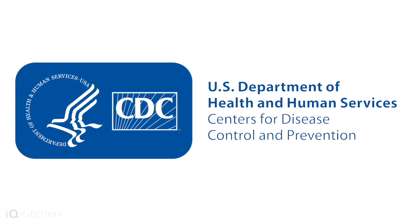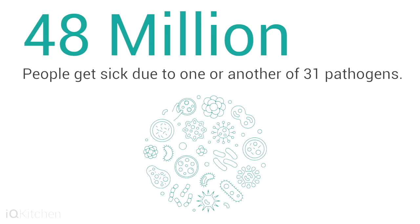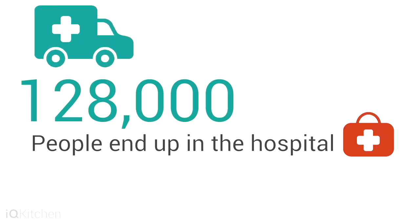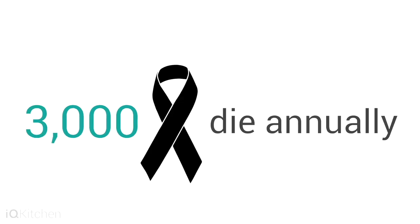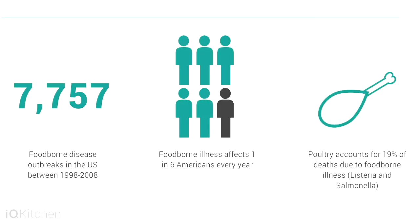The Centers for Disease Control and Prevention estimates that 48 million people get sick due to one or another of 31 pathogens. About 128,000 people end up in the hospital, while 3,000 die annually. Between 1998 and 2008, 7,757 foodborne disease outbreaks were tracked. Poultry accounts for 19% of deaths due to foodborne illness related to listeria and salmonella.